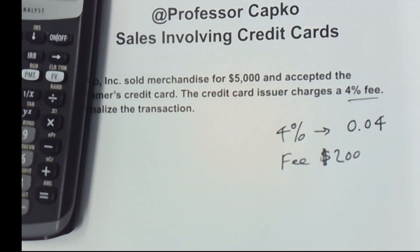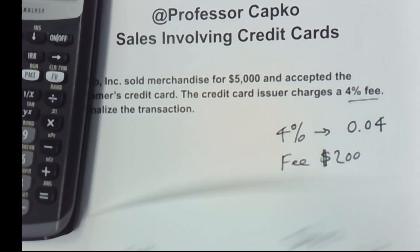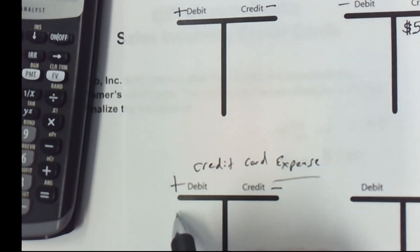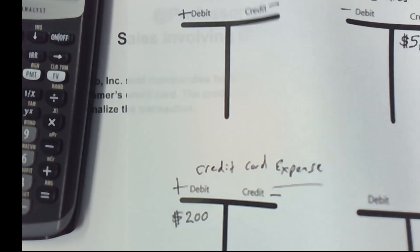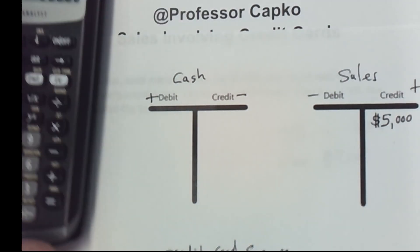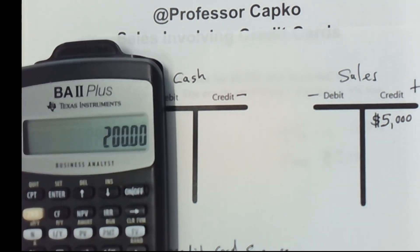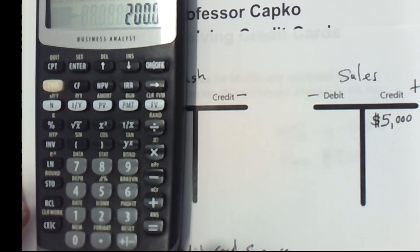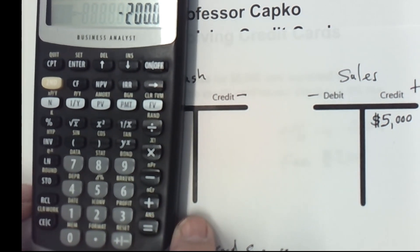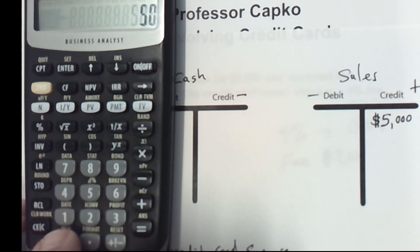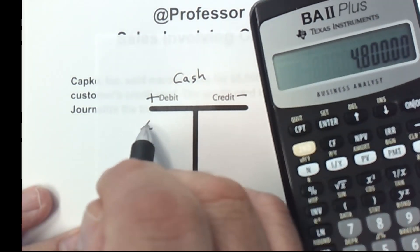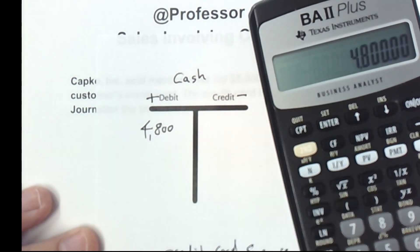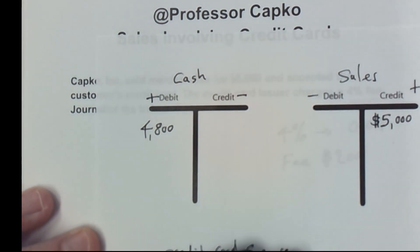That's $200 that's going to go to the credit card company, so I'm going to put that expense here as a debit because it's increasing our expenses — $200. Finally, we're going to get the amount of cash, which would be $5,000 minus the $200. That means our cash is going to be a debit of $4,800. Now that I've laid everything out in the T-accounts, it's a simple matter to put it into the general journal.